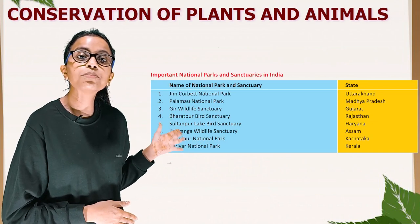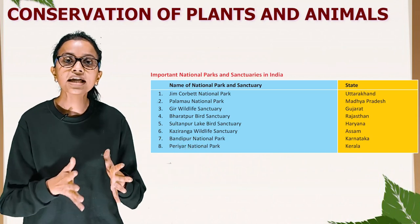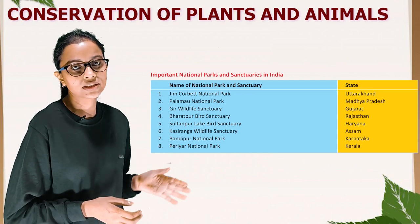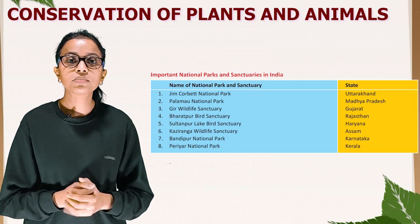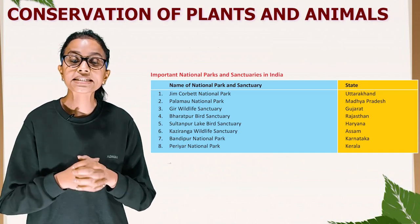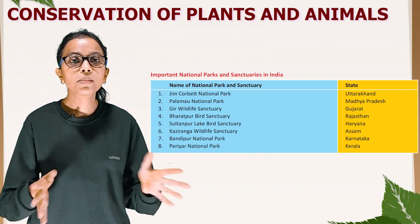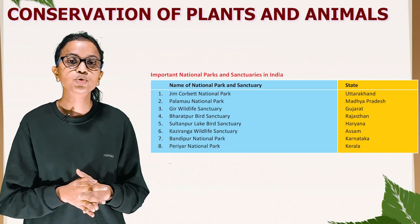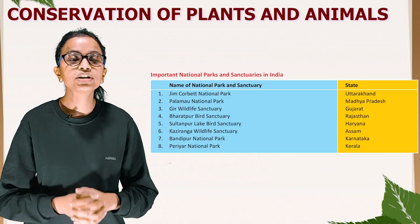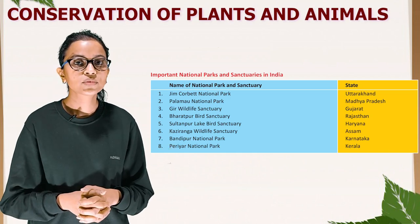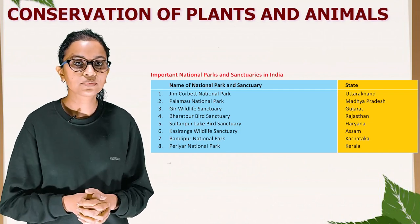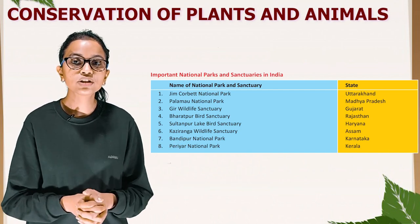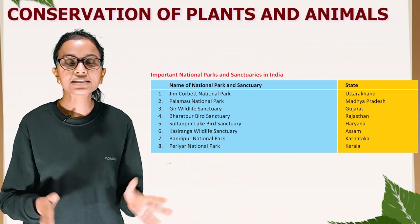This table shows important national parks and sanctuaries in India. Although India has 515 sanctuaries and national parks, here are some important ones: Jim Corbett National Park in Uttarakhand, Palamau National Park in Madhya Pradesh, Gir Wildlife Sanctuary in Gujarat, Bharatpur Bird Sanctuary in Rajasthan, Sultanpur Lake Bird Sanctuary in Haryana, Kaziranga Wildlife Sanctuary in Assam, Bandipur National Park in Karnataka, and Periyar National Park in Kerala.